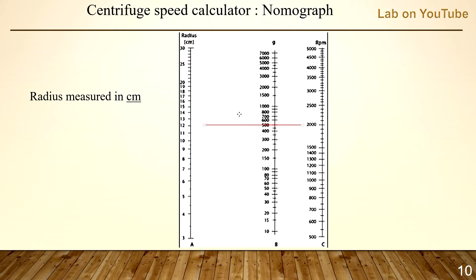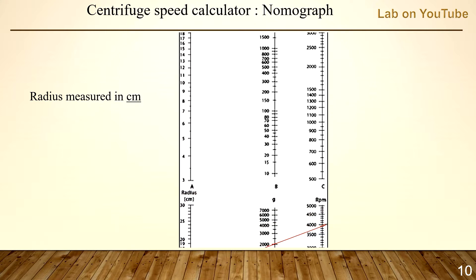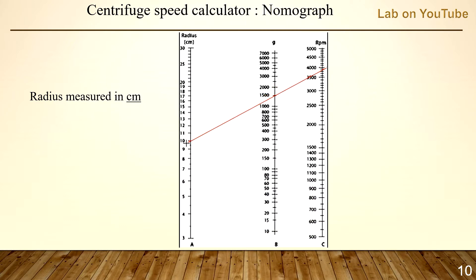This is a nomograph chart. All you need is to plot your numbers, place your ruler at the right radius and selected RCF, then read the RPM for your centrifuge. As you can see, the smaller the radius, the higher the RPM required to achieve the same RCF. I'll put the link for this chart below the video as well.